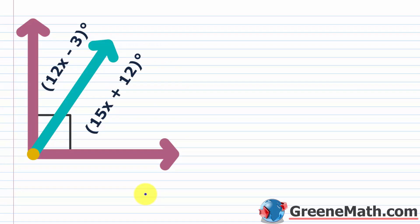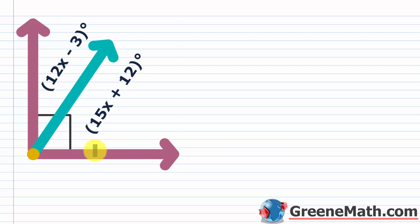Let's wrap up the lesson by talking about complementary and supplementary angles. When the sum of the measures of two positive angles is 90 degrees, the angles are called complementary angles. In this example, the larger angle is 90 degrees, indicated by the square symbol, and it's split into two smaller angles: one is 15x plus 12 degrees, and the other is 12x minus 3 degrees. We use the fact that complementary angles sum to 90 degrees.